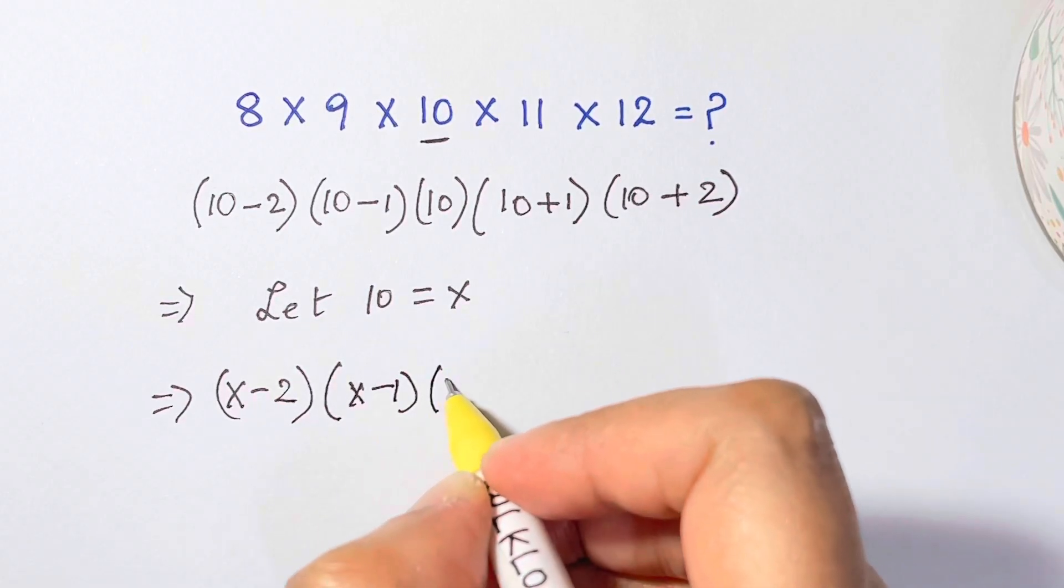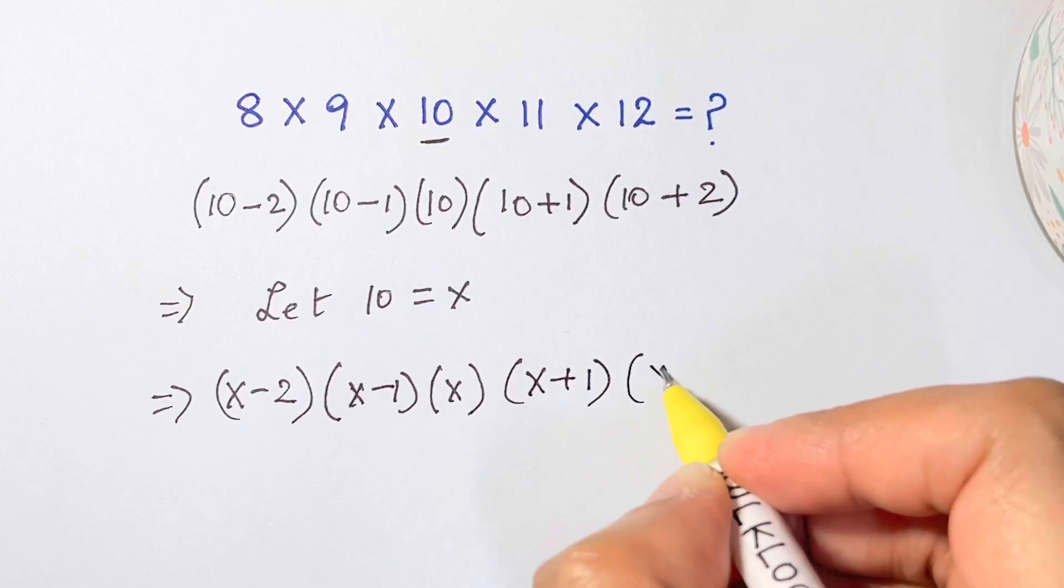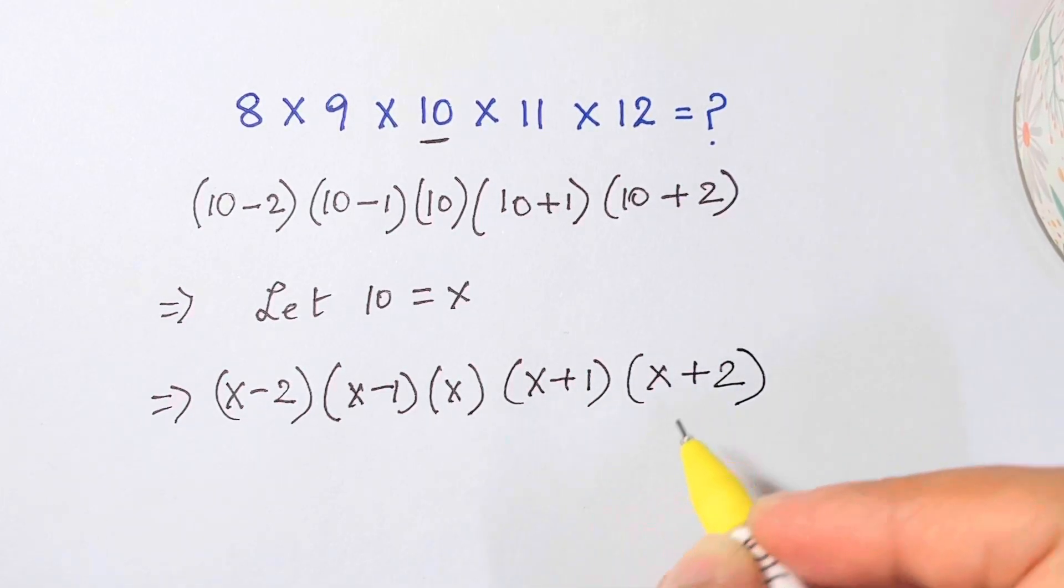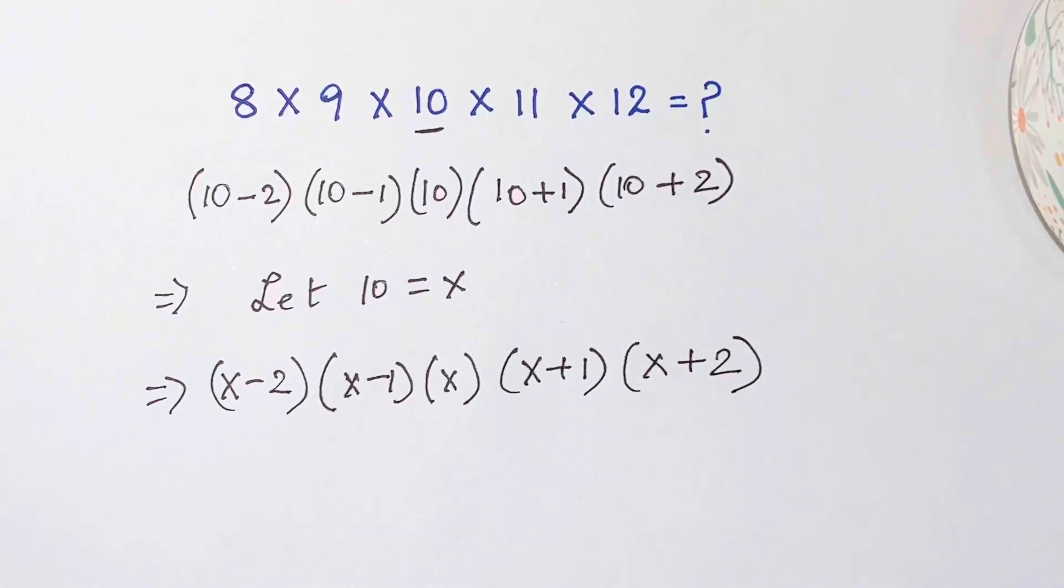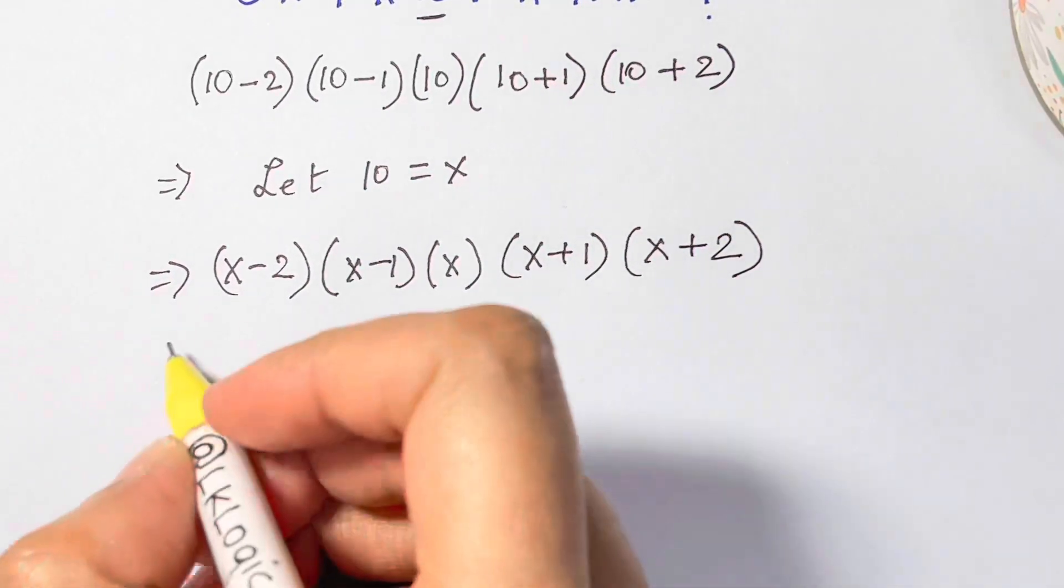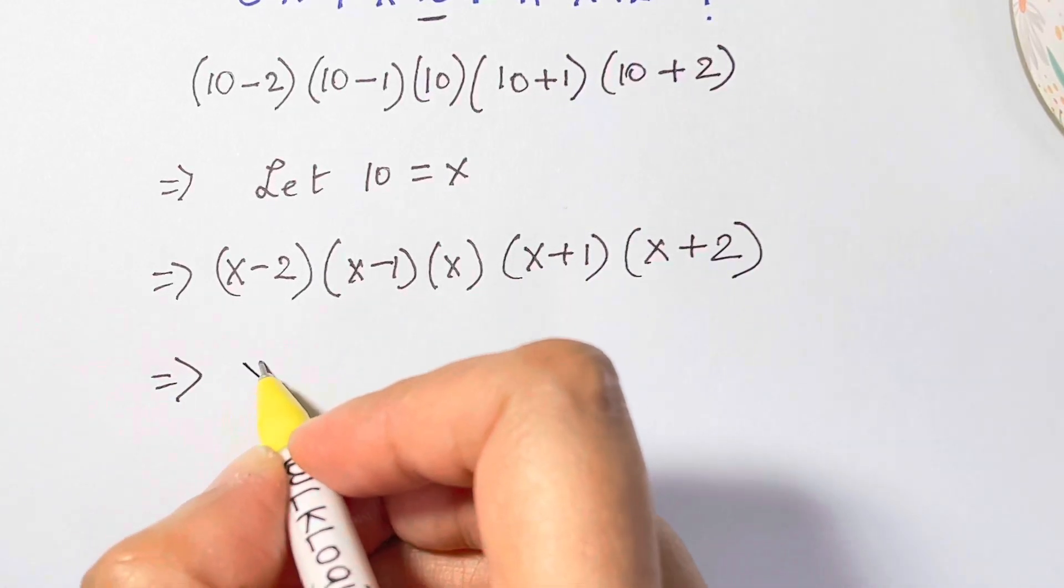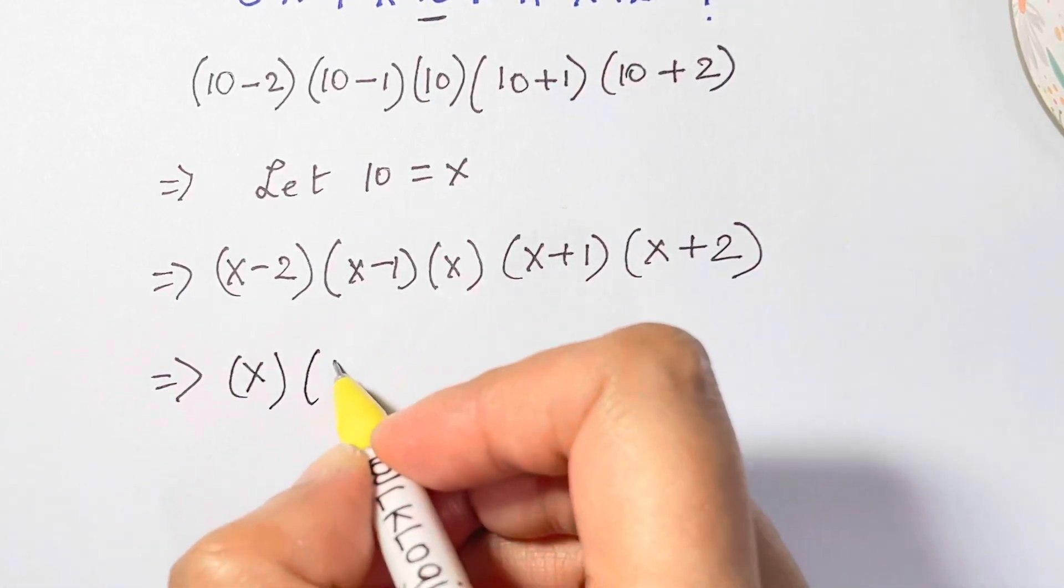The easiest way to solve the problem, let's do it. Now just rearrange the terms. x I'm going to keep it here, then I have (x - 2) and (x + 2), then I have (x - 1) and then (x + 1).